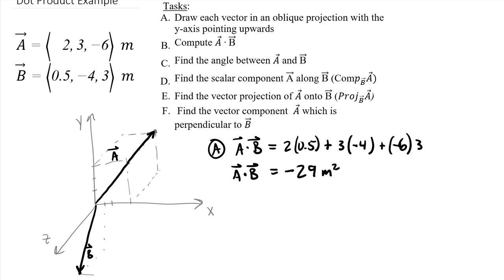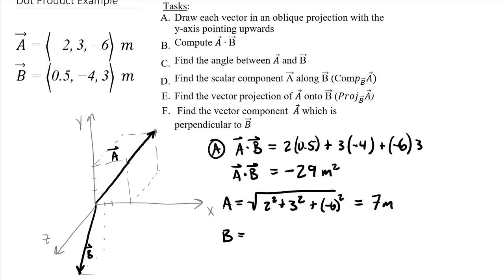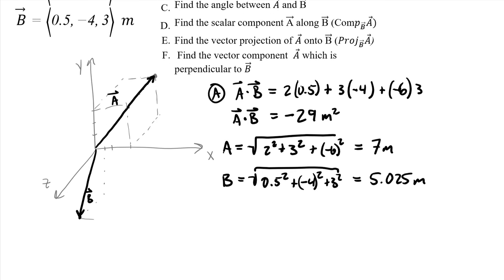To find the angle between A and B we first need the length of each vector. The length of A equals the square root of two squared plus three squared plus six squared, giving a value of seven meters. Then the length of B, applying the Pythagorean theorem to its components — 0.5 squared plus negative four squared plus three squared — gives a decimal value of 5.025 meters.